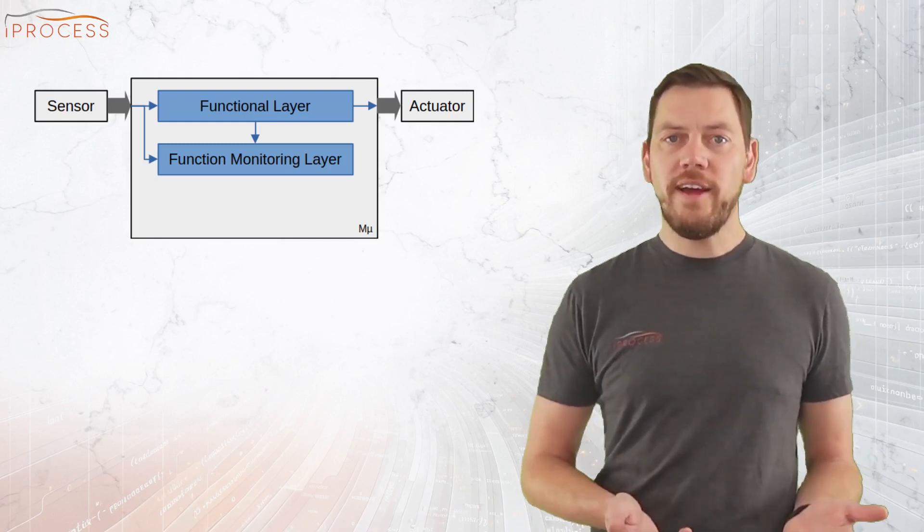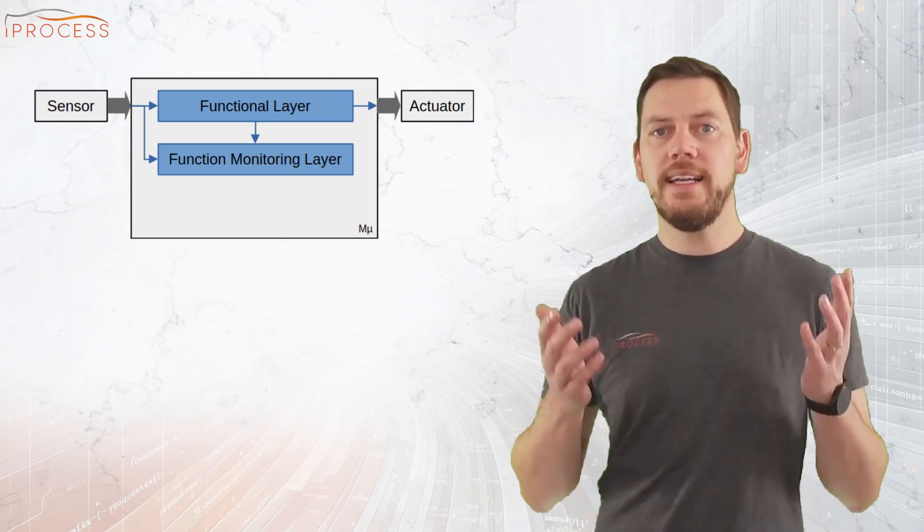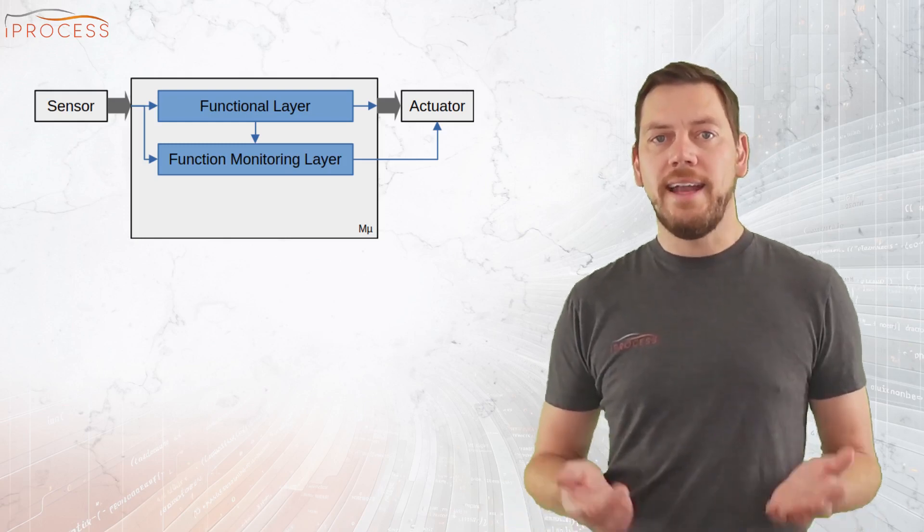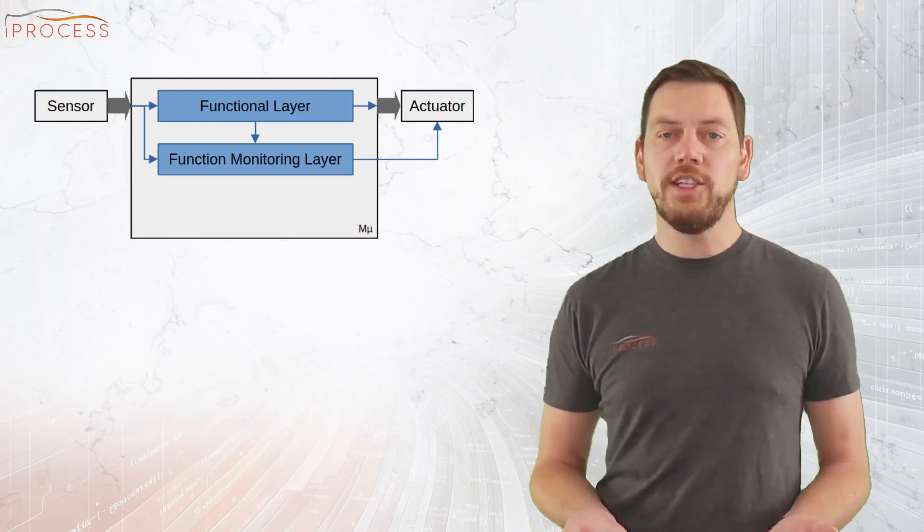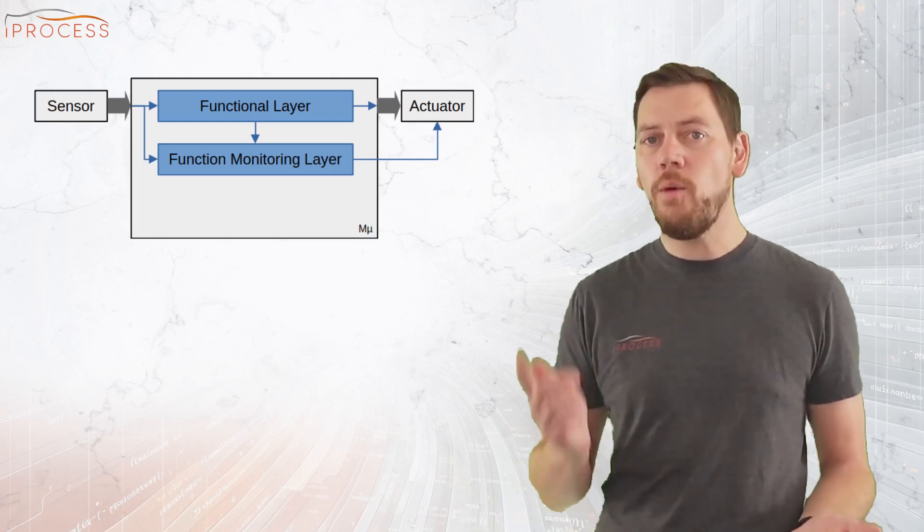Either in an exact fashion or in a tolerance band way to keep it simple on resources. This second layer has a direct connection to the shut-off path of the actuator and in case it detects a wrong calculation in the functional layer, it has the ability to turn the actuator off independent of layer 1.